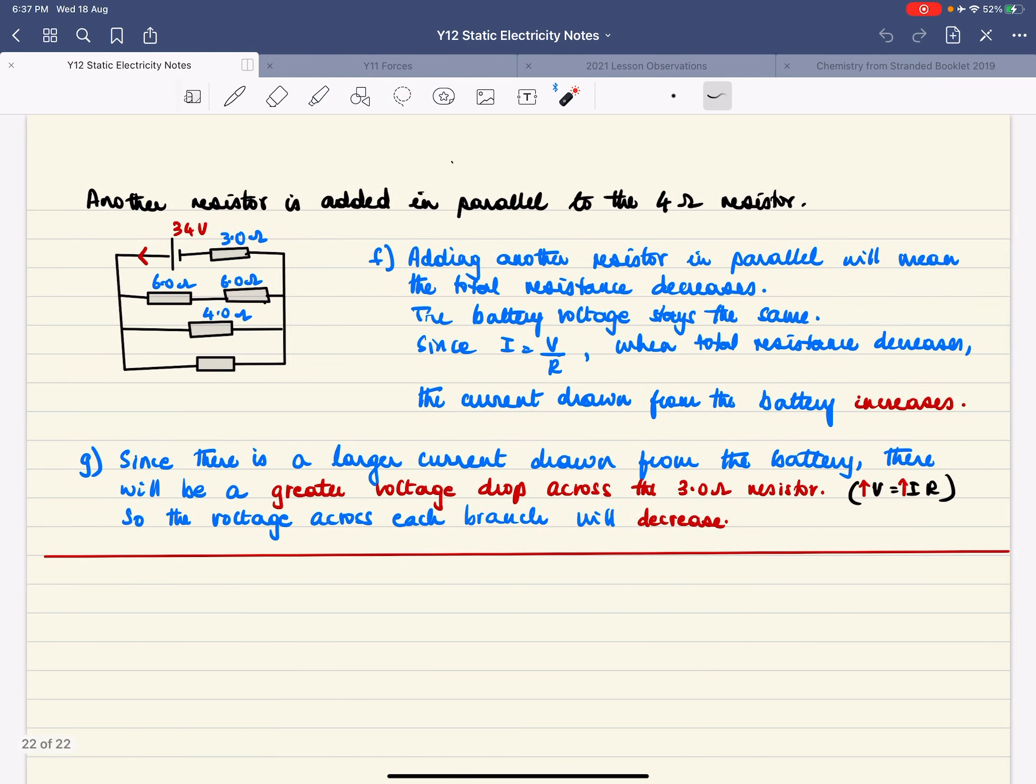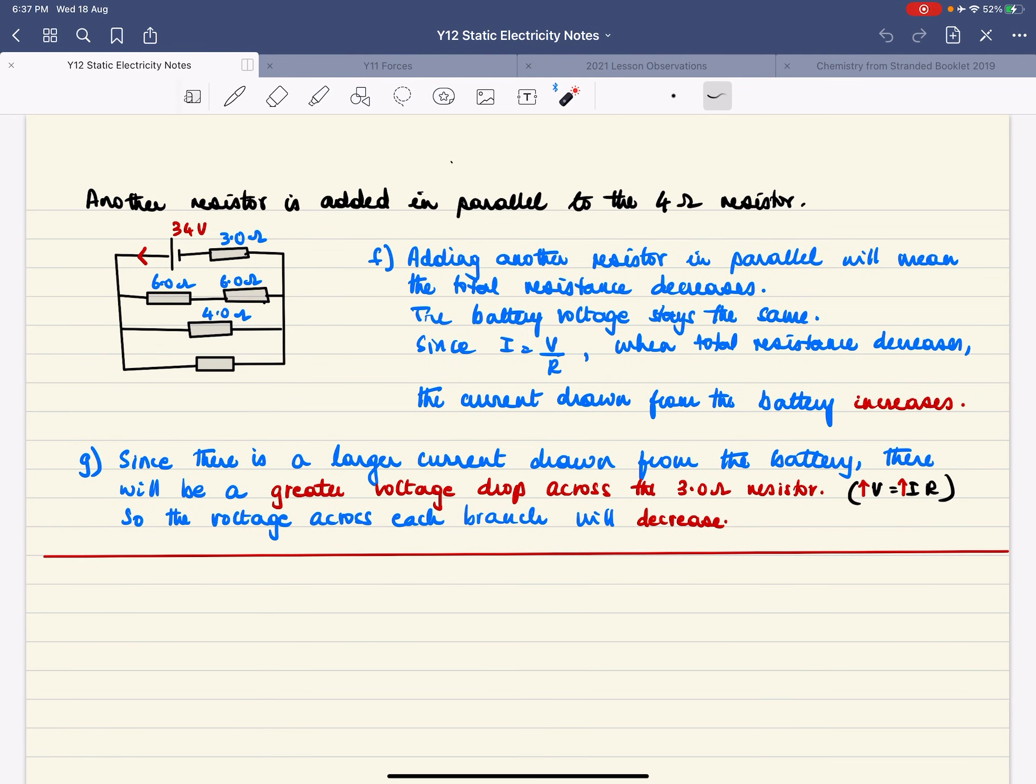Now the question goes on to the next part where it says another resistor is added in parallel to the 4 ohm resistor. So the circuit now looks like this. Now when you add more resistors in parallel the total resistance decreases. If the total resistance decreases then the current from the battery is going to increase.